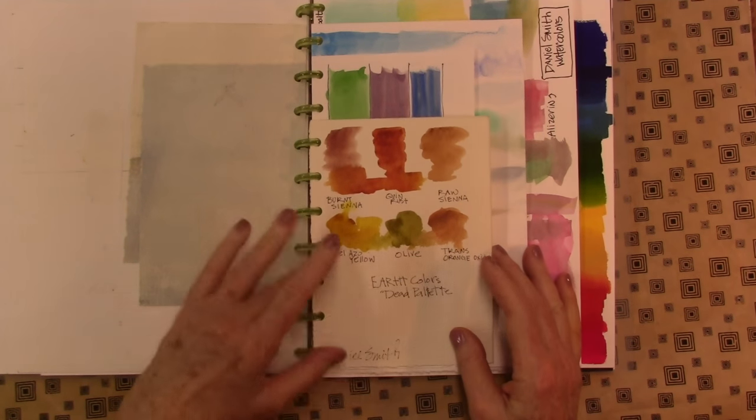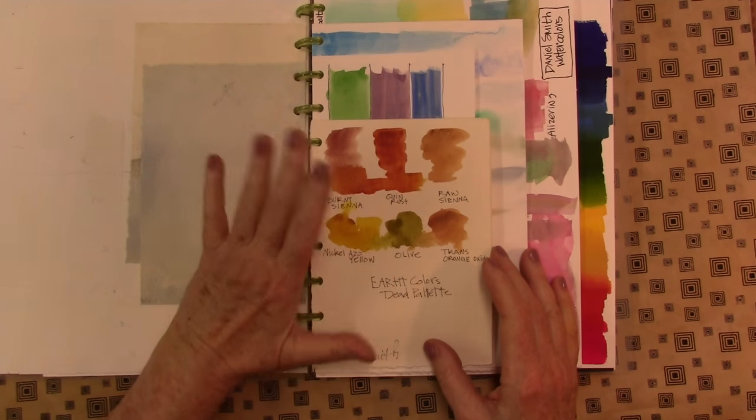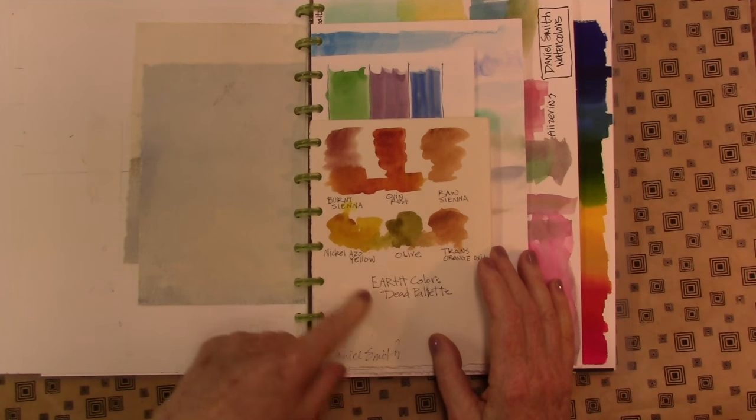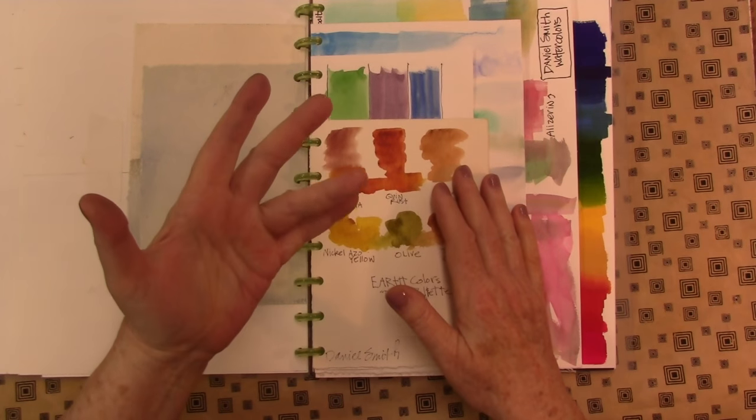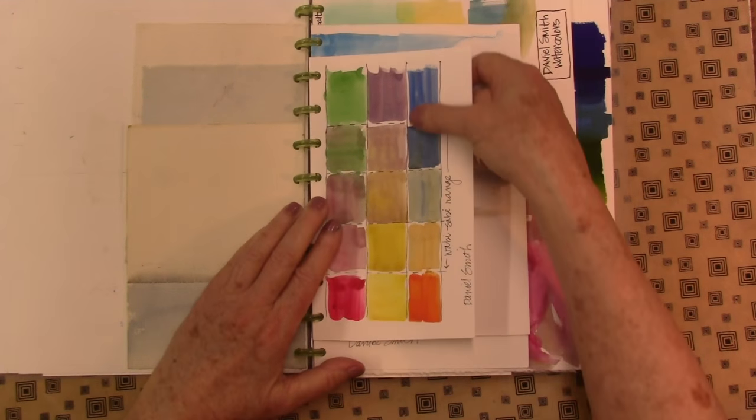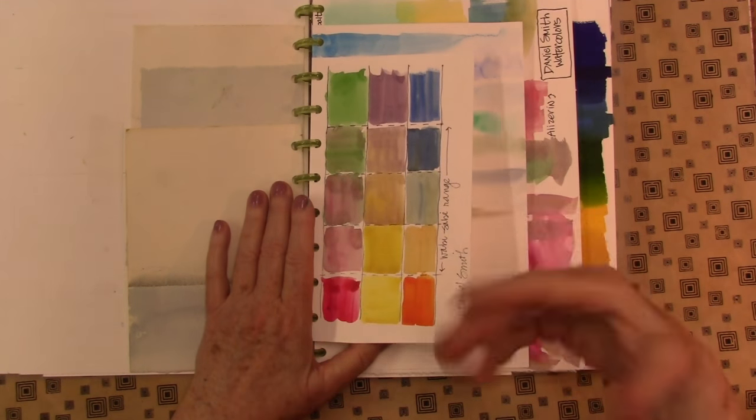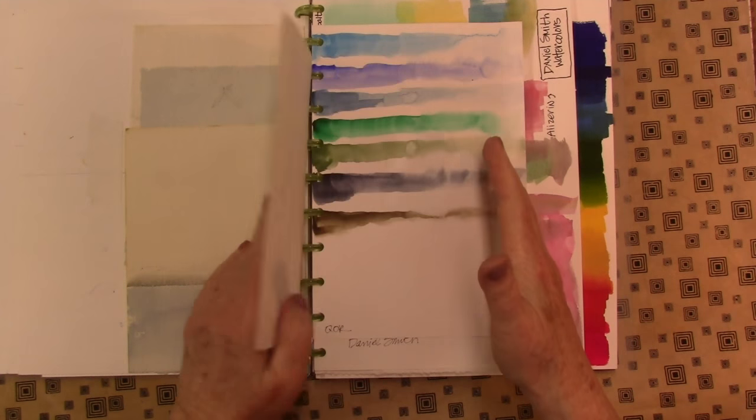I would say that when you are swatching out colors and making little palettes and playing, use whatever paper you would use for watercolor. This is earth colors or what we call the dead palette, and this is another important element I think to a really good basic palette. This is wabi-sabi range, again Daniel Smith wabi-sabi colors.